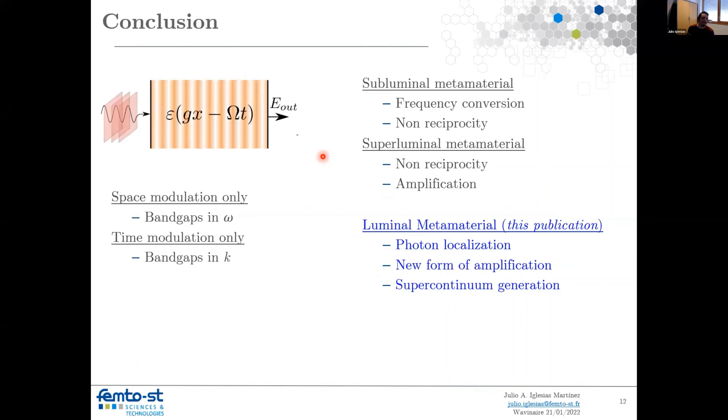Here, I would like to underline some conclusions that even though the topic is very rich, we have barely scratched the surface, and each of them is just a wall. For the space modulation, remember that you have bandgaps in omega, and only the evanescent k modes are allowed. When you pass to the time modulation only, you have bandgaps in k, and amplification is allowed.